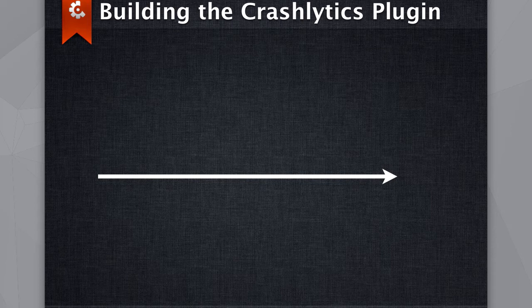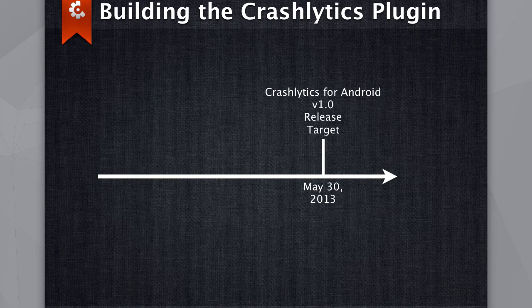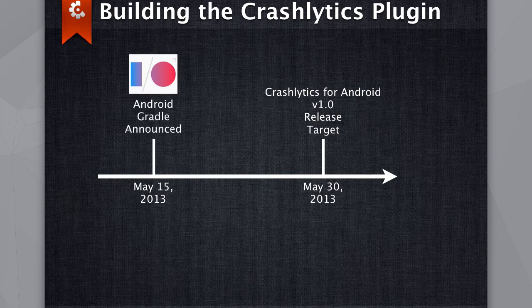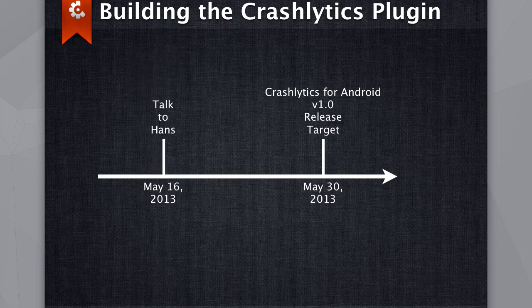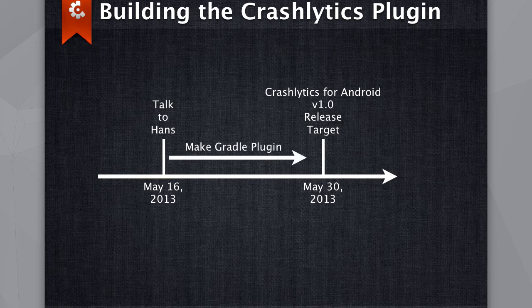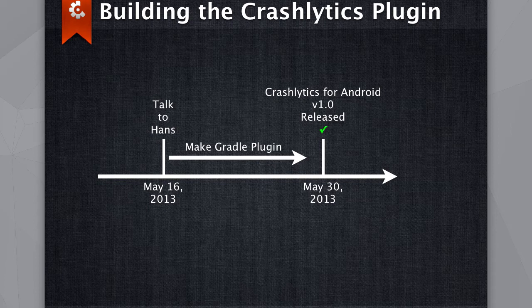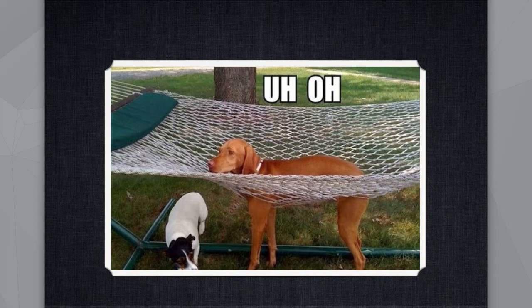Our target release date for Crashlytics for Android was May 30th. We already had Ant and Maven plugins as well as IDE integrations. Then at Google I/O on May 15th, Android for Gradle was announced. So we talked to Hans, our product manager went over to talk to him in kind of a panic, asking about what we'd need to do to implement a Gradle plugin. We made our Gradle plugin in the time between that, and we still released Crashlytics 1.0 including Gradle support on our target date — which just goes to show how easy it is to create a Gradle plugin.